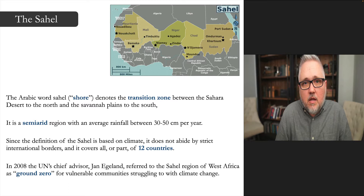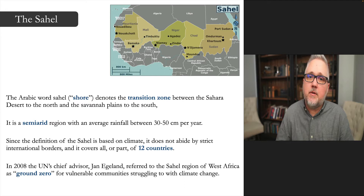It's a semi-arid region with rainfall averaging between 30 and 50 centimeters per year — definitely not the Sahara Desert, but one in which people can live productively. Since the Sahel is defined by climate as a transition zone, it doesn't abide by strict international borders and changes quite quickly over time.